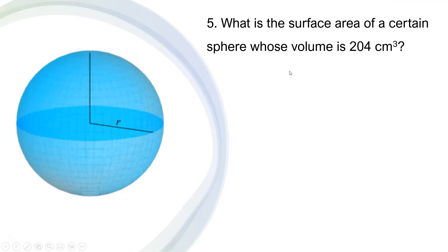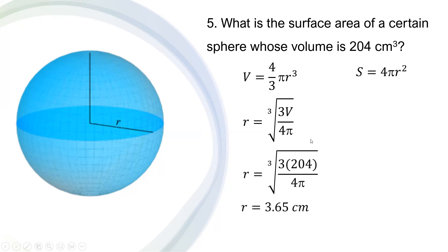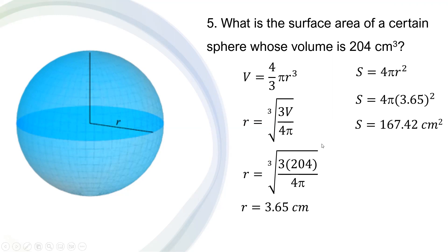For problem number five: what is the surface area of a sphere whose volume is 204 cubic centimeters? We know the surface area equation is S equals 4 pi r squared, but we don't have the radius, so we derive it from the volume. r equals the cube root of 3V over 4 pi, giving a radius of 3.65 centimeters. Substituting into the surface area equation: S equals 4 pi multiplied by 3.65 squared, we get 167.42 square centimeters.